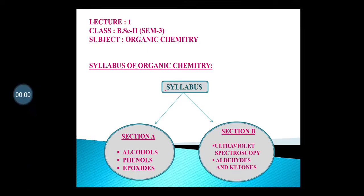Good morning students. In this semester I am going to teach you organic chemistry. The organic chemistry book contains two sections: Section A and Section B. Section A contains alcohols, phenols and epoxides. Section B contains ultraviolet spectroscopy, aldehydes and ketones.